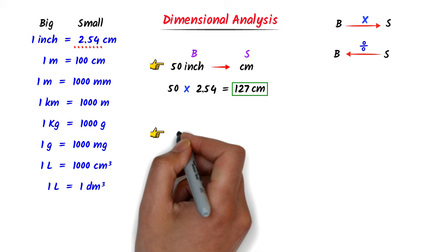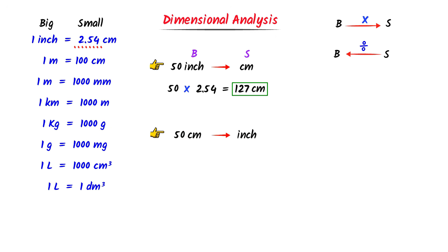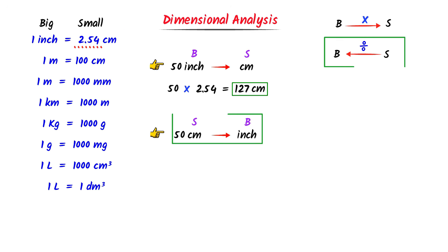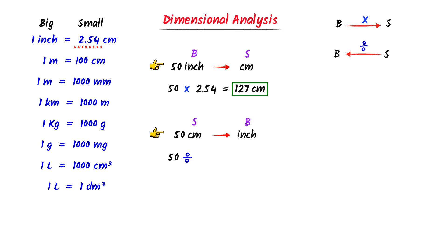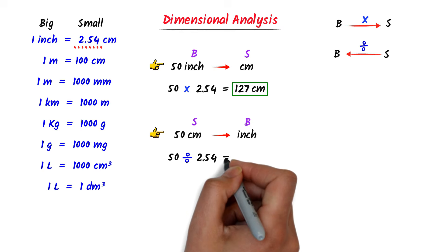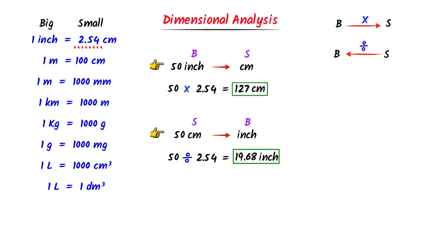Secondly, convert 50 centimeters to inches. We know that centimeter is a smaller unit and inch is a bigger unit. Since I go from a smaller to a bigger unit, I divide 50 by the conversion factor. The conversion factor is 2.54. After calculation, I get 19.68 inches. Using this simple method, I can easily convert one set of units to another set of units.